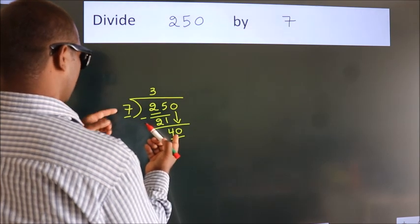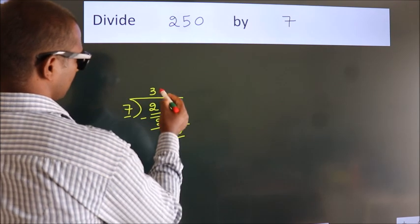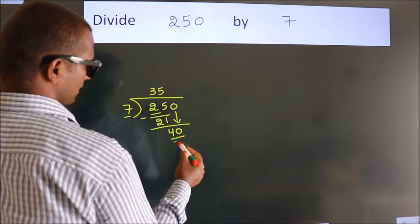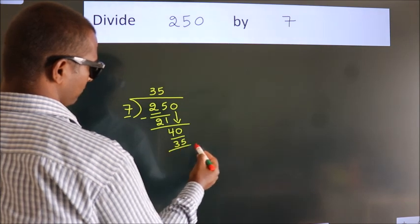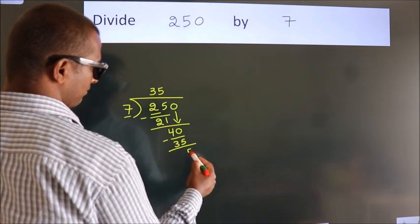A number close to 40 in the 7 table is 7 fives, 35. Now we subtract. We get 5.